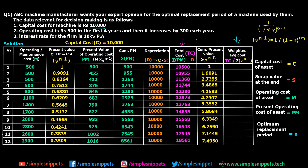Finally, the weighted average cost = total cost / cumulative present value. For year 1: 10,500 / 1 = 10,500. For year 2: 10,955 / 1.9091 = 5,738. For year 3: 11,368 / 2.7355, and so on. I've now filled out the entire weighted average cost column.